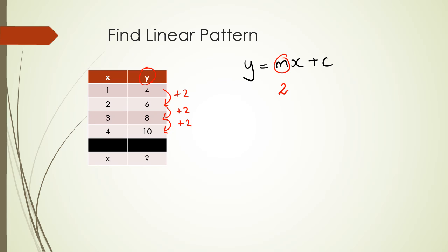In straight line equations, m is known as the gradient. This table can actually be drawn as a straight line graph, but I'll go into that later. So far we've got y = 2x + c, where 2 is the gradient — the m value.